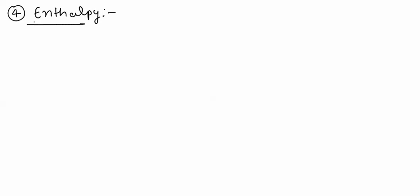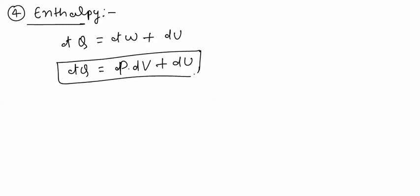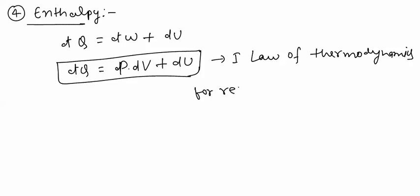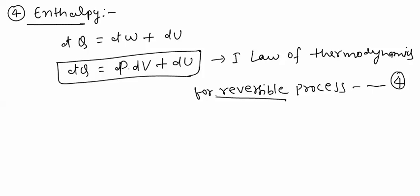The fourth application of the first law of thermodynamics for a closed system is enthalpy. From the first law: δQ = δW + dU. Substituting δW = p·dV (valid for reversible processes): δQ = dU + p·dV — this is the first law for a reversible process, equation 4. Note that equation 3 (δQ − δW = dU) is valid for both reversible and irreversible processes, but equation 4 is valid only for the reversible process.